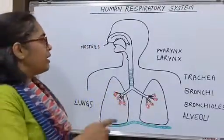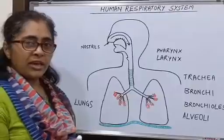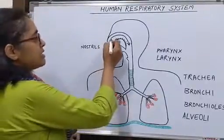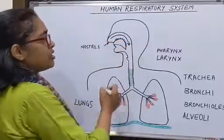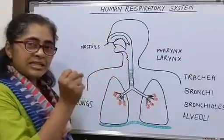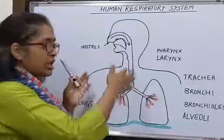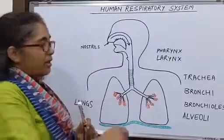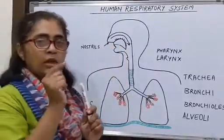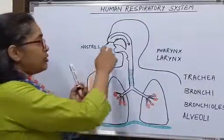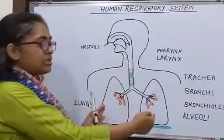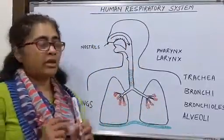The outside air moves into a pair of nostrils. From the nostrils it enters into the nasal passage. The nasal passage has fine hair which traps dust and other impurities and does not allow them to enter into the lungs. The nasal passage lining also has mucus which helps to cool down the warm outside air and bring it to body temperature before it enters into the lungs.